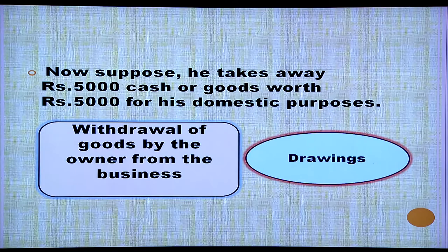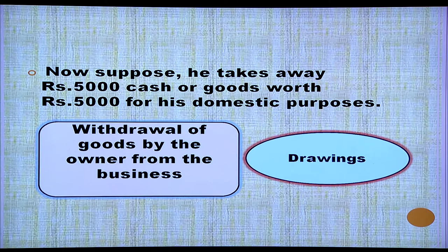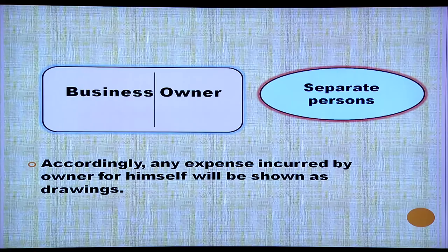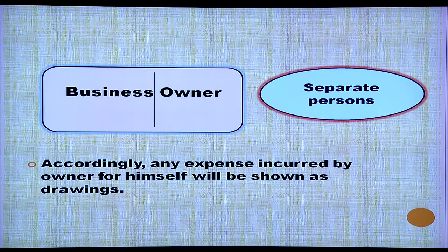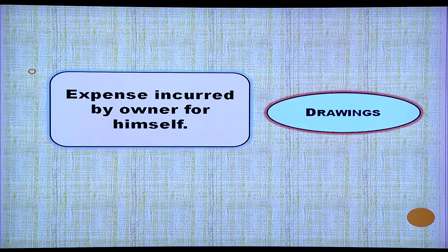This one lakh invested by the owner is the capital, and it is the liability of the business towards the owner. Now suppose he takes away rupees five thousand in the form of cash or goods for his domestic use — withdrawal of goods by the owner from the business. This is recorded in the business accounts as drawings. Business and owner are separate persons, so any expense incurred by the owner for himself will be shown as drawings.